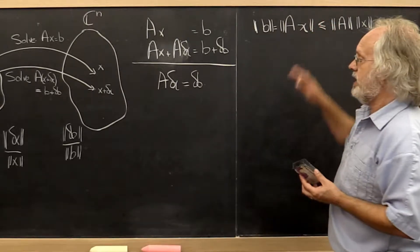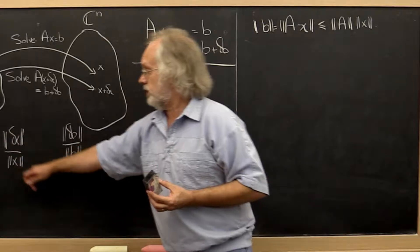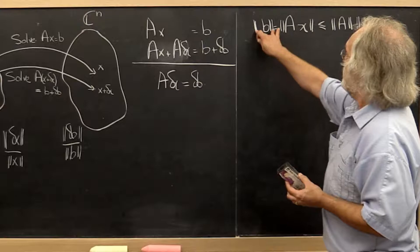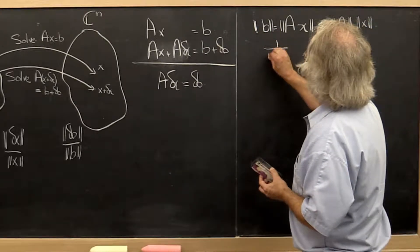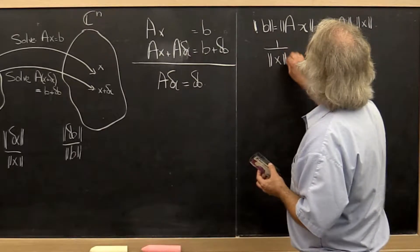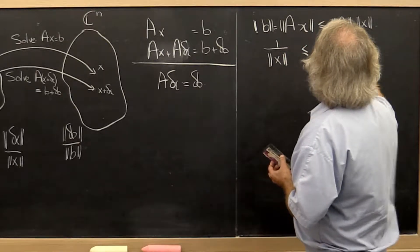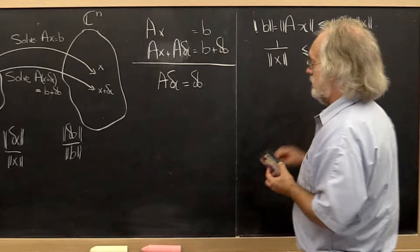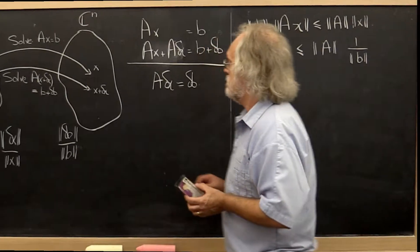We can actually rearrange this to get something that looks like it might help us by saying, let's bring the norm of x to the left, the norm of B to the right, and rewrite this as 1 over the norm of x is less than or equal to the norm of A times 1 over the norm of B. That puts us partially towards this right here.